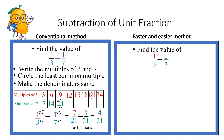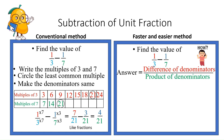Now the same question, let us answer it by the faster and easier method. The answer is difference of denominators upon product of denominators. Remember, you have to write the bigger number first: 7 minus 3 upon 3 times 7, which gives you 4/21.